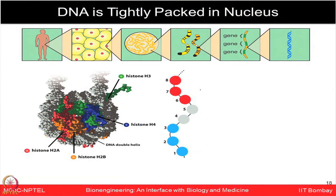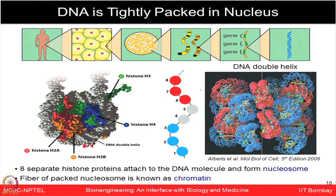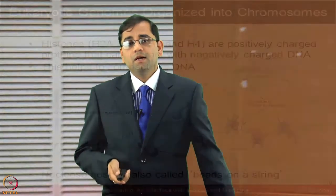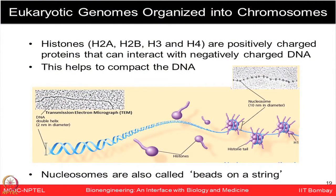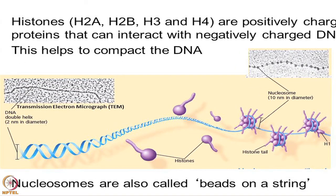In eukaryotic genomes, histone proteins — H2A, H2B, H3, and H4 — are positively charged and interact with the negatively charged DNA molecule, helping to compact it. Nucleosomes could be seen like beads on a string. From DNA to chromosomes: a chromosome consists of a DNA molecule packed together with proteins, and these chromosomes can be seen with their bead-like structures.